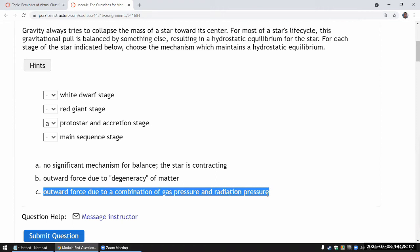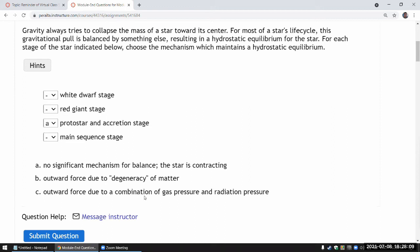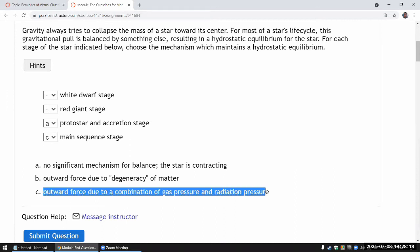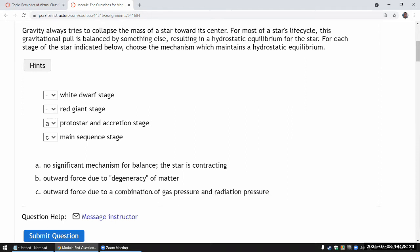And which one is more significant? It depends. It depends on the mass of the star. For a star like our sun, it's the gas pressure that'll be the dominant factor.